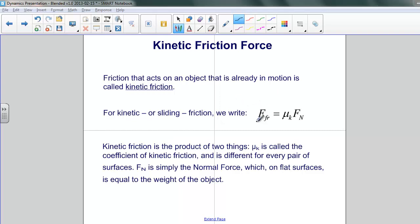For kinetic friction, we have a simple equation which says that the force of friction is proportional to, through this constant, the normal force. Now, for horizontal surfaces, the normal force is just the same as the weight of the object.